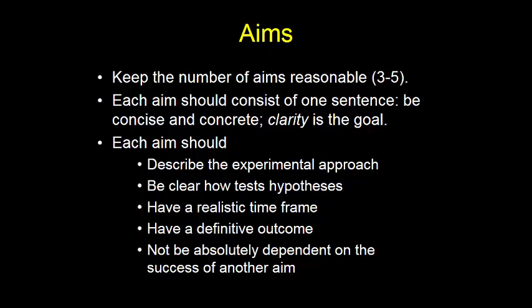Describe the experimental approach — the study design — because if you do not have that study design crystal clear, it's going to be confusing from the get-go. Be clear how you're going to test the hypotheses. It has to have a realistic time frame and a definitive outcome — state exactly what your outcome is going to be. Another trick: be very careful that each aim is not dependent on another. You can't have aim one be testing whether a new instrument works to measure something, and then in aim two use that instrument. What happens if that instrument in aim one doesn't work?